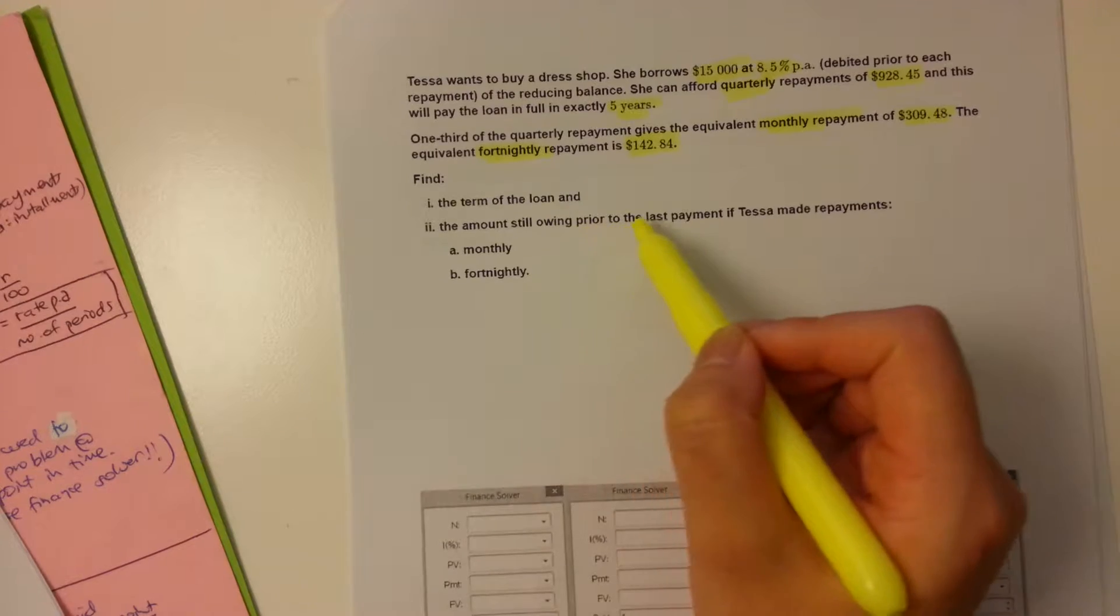Okay, so let's start off with monthly first. To find the term of the loan, obviously we want to find N. Anything that is to do with the time or duration of the loan or how long the loan is going to be, your friend's going to be N right here. So, we're going to hit enter, and we're going to fill in the rest of the information. So, obviously, 8.5% is your interest rate. Your present value is $15,000.